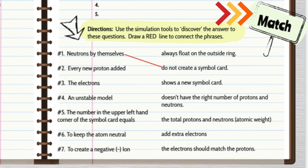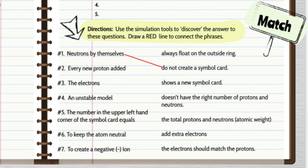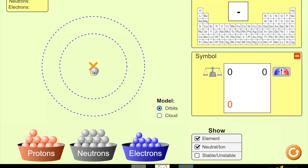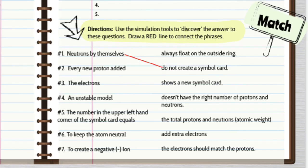After you've finished your observations, you can move down to the bottom half of the notebook page for some matching. To do these matching sections, read the first half of the phrase, then take a look at the simulator and do exactly what it's saying. So in this case, when I move a neutron, no element card pops up — that's why it's the match in the notebook. Use the simulator to continue making your matches.